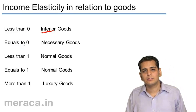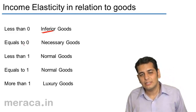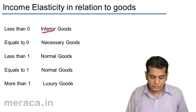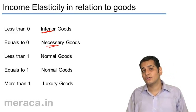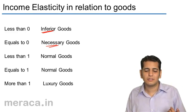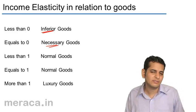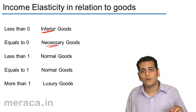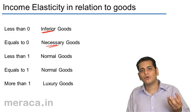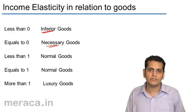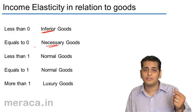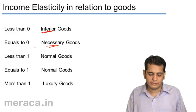What would be the case if the elasticity of demand equals zero? This is generally the case for necessities, because a change in income is immaterial — it does not have any impact on the consumption of necessities. We do not tend to increase consumption of necessities with an increase in income, nor do we decrease it with a decrease in income. So the elasticity equals zero because there is no change in demand of necessities.